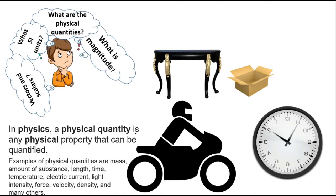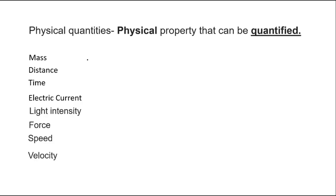In physics, a physical quantity is a physical property that can be quantified, and we have many physical quantities such as mass, distance, time, electric current, light intensity, and so on.